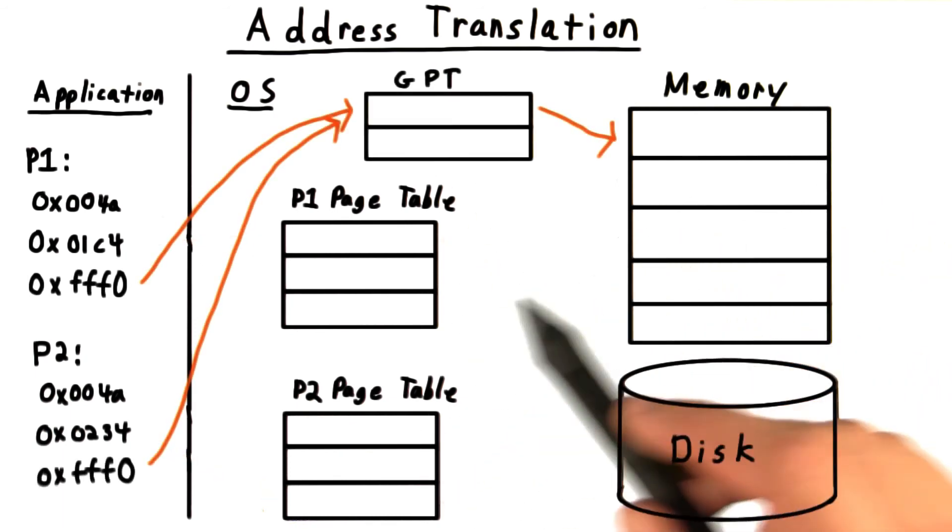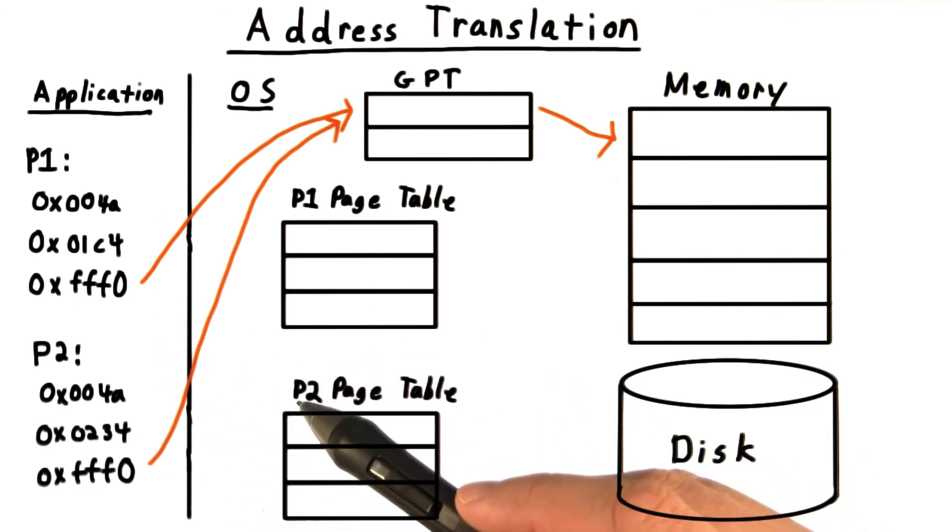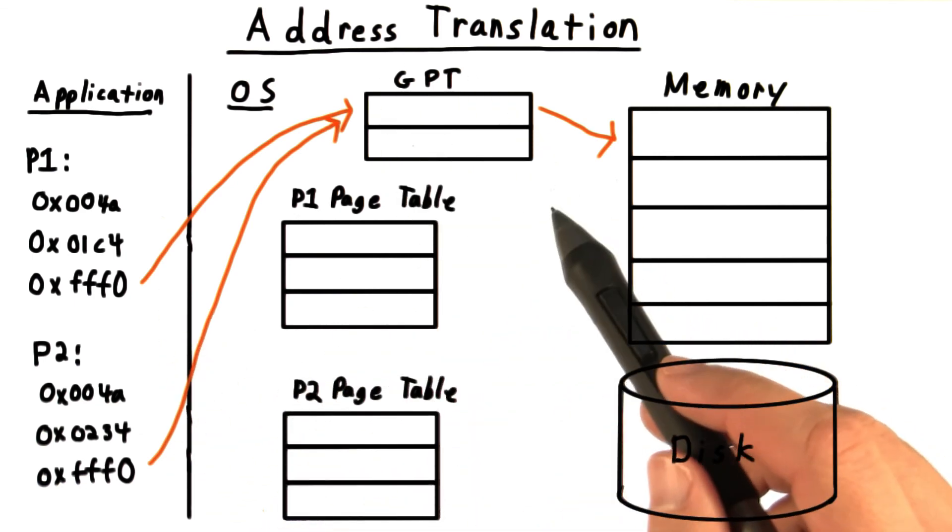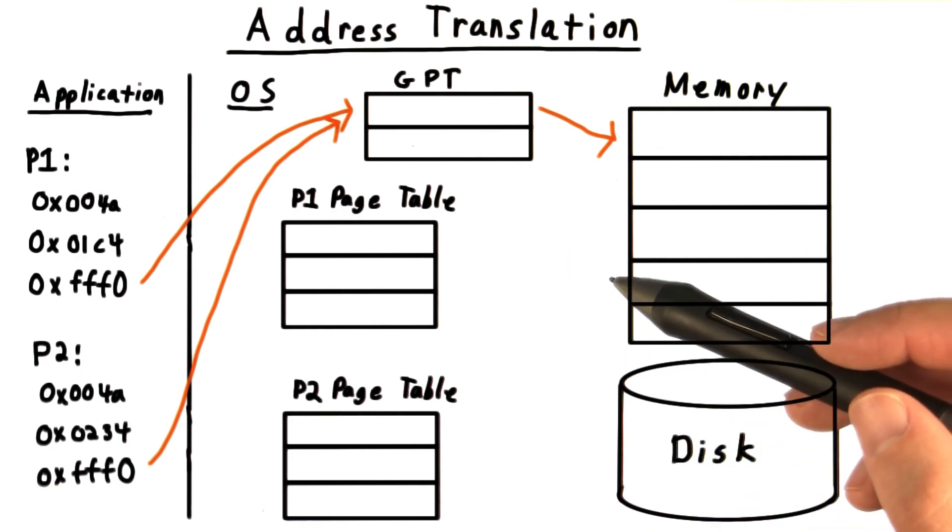Lastly, I should point out that because kernel addresses are the same for each process, they get their own page table that is shared among the processes. This is called the global page table.